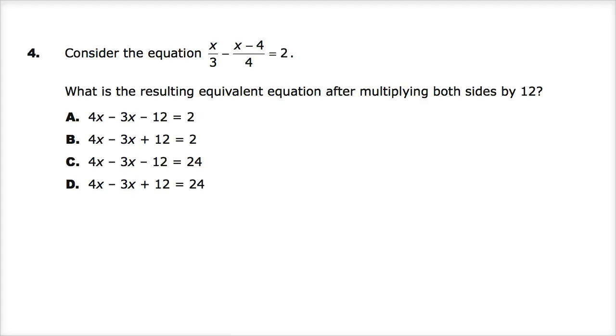Consider the equation: x over 3, or x divided by 3, minus the quantity x minus 4 over 4 equals 2. What's the resulting equivalent equation after multiplying both sides by 12?